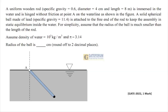Hello students, welcome to the session of solutions for GATE 2022 Fluid Mechanics, Mechanical Engineering. Going on to the first question: a uniform wooden rod with specific gravity 0.4, diameter 4 centimeters, length 8 meters is immersed in water and is hinged without friction at a point A on the water line, as shown in the figure.